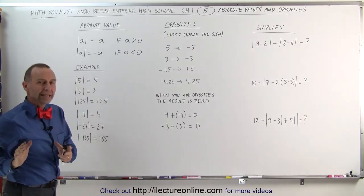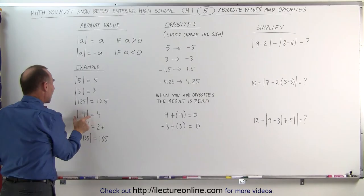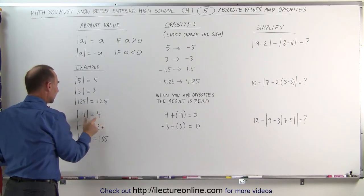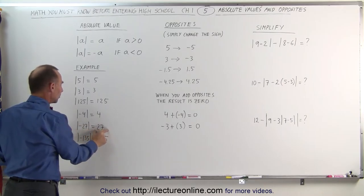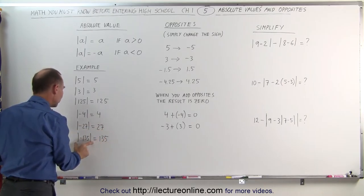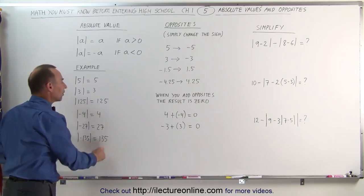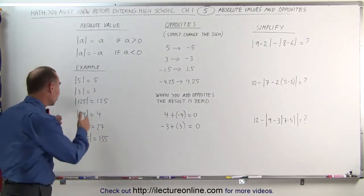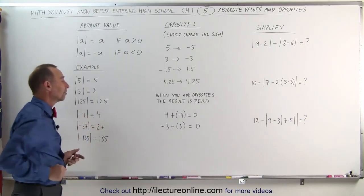But it's easier to see it in the example. If you take the absolute value of negative 4, you get a positive 4. If you take the absolute value of negative 27, you get a positive 27. And if you take the absolute value of negative 135, you get a positive 135. The absolute value symbol simply takes a negative number and turns it into a positive number.